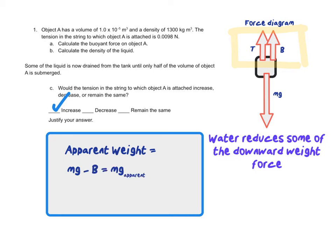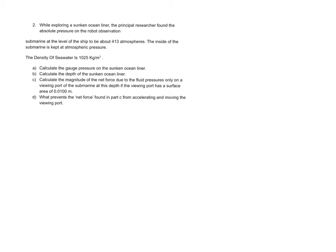Alright, so here we have free response two. While exploring a sunken ocean liner, the principal researcher found the absolute pressure on the robot observation submarine at the level of the ship to be about 413 atmospheres. The inside of the submarine is kept at atmospheric pressure. The density of seawater is 1025 kilograms per meter cubed. A: Calculate the gauge pressure on the sunken ocean liner.